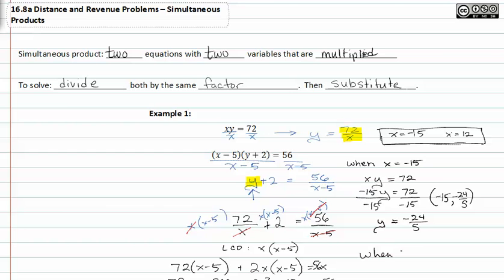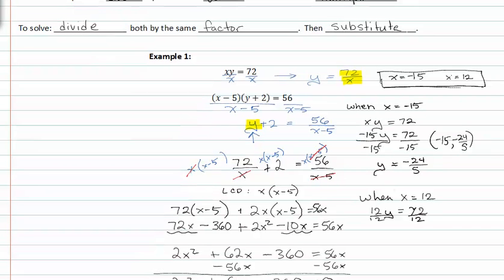When x is equal to twelve, we get twelve y is equal to seventy-two, divide by twelve, and our other coordinate point is y equal to seventy-two divided by twelve is six. So our other coordinate point is twelve, comma six.